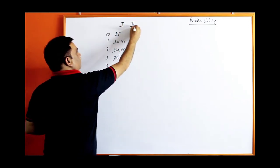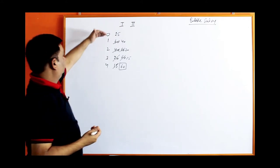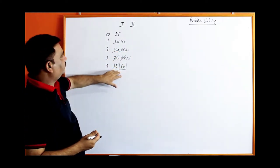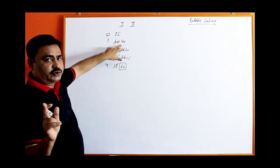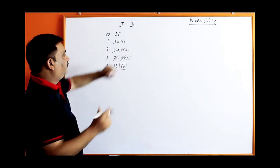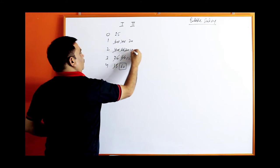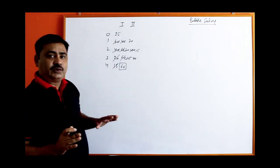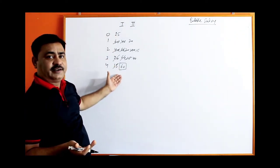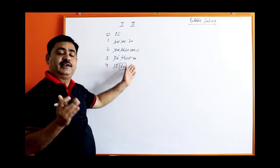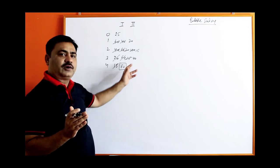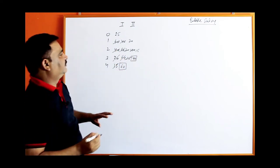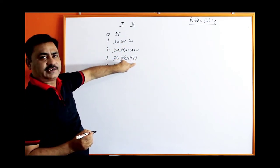Now the same process we have to repeat a second time. Now values are 25, 40, 20, 15, and 60. 25 is greater than 40 — no, do not swap. 40 is greater than 20 — yes, swap. 40 is greater than 15 — yes, swap. 40 is greater than 60 — no, because the biggest one is already at the end. 40 will remain and 60 will be at the end. So a second value, 40, is now arranged — two values are arranged in the second round.